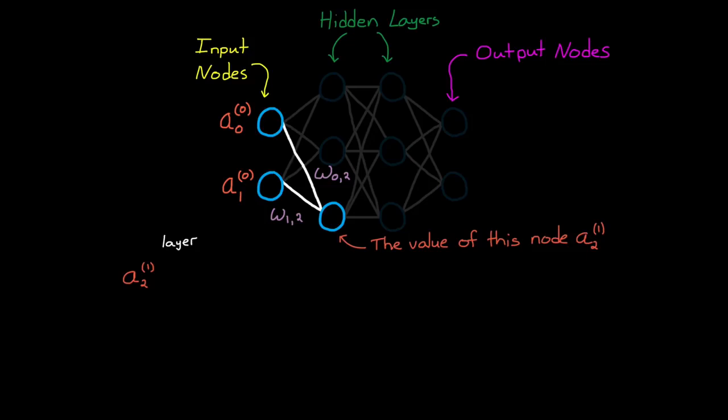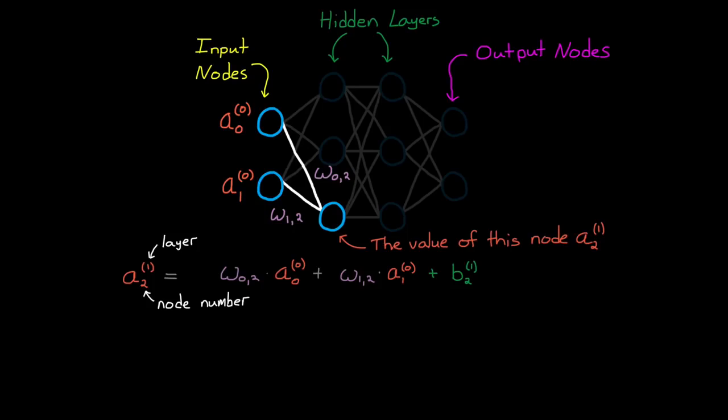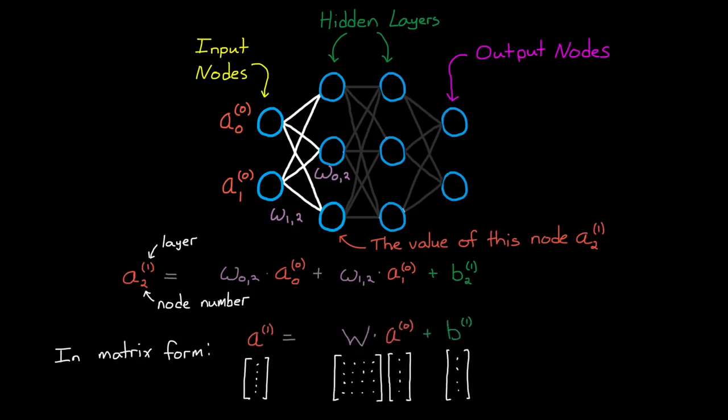The value of a node is equal to the sum of every input node times its respective weighting factor plus a bias. And we can perform this calculation for every node in a layer, and then write it out in a compact matrix form as a system of linear equations.